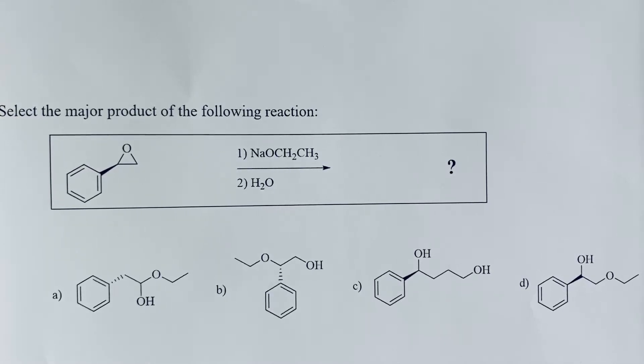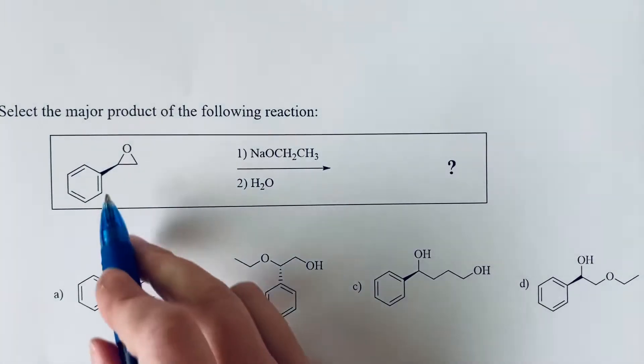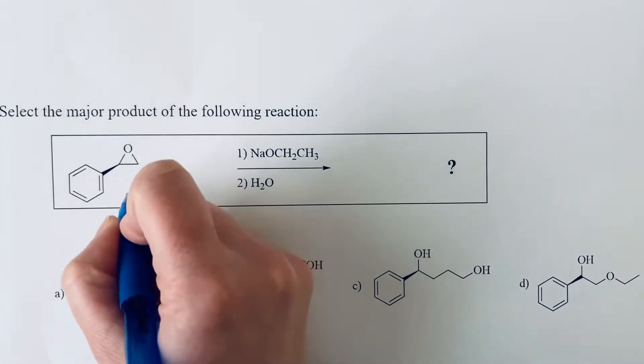Select the major product of the following reaction. If we look at our starting material, we see that we have an epoxide.